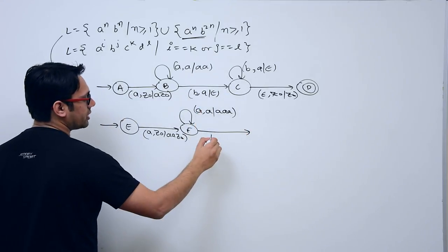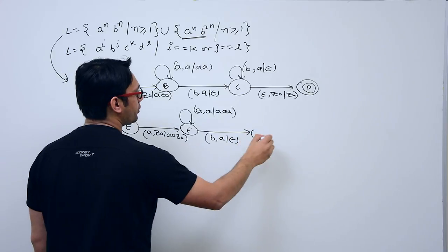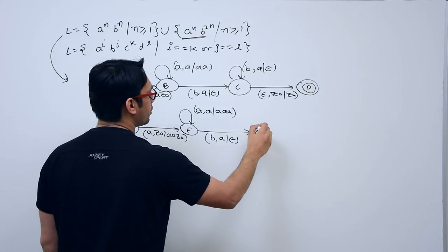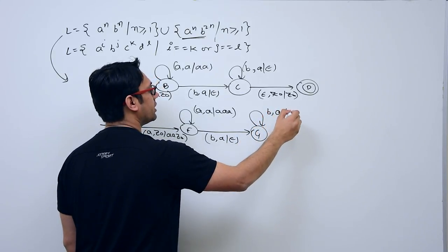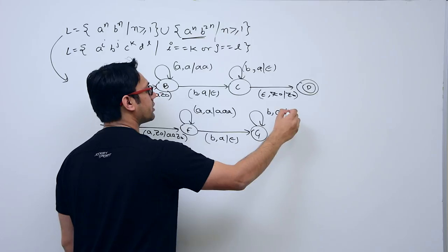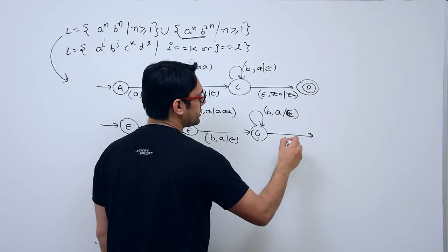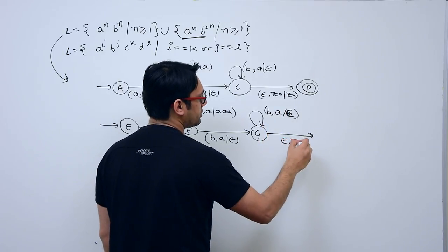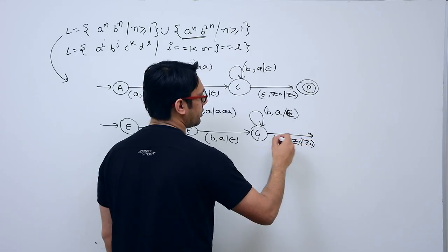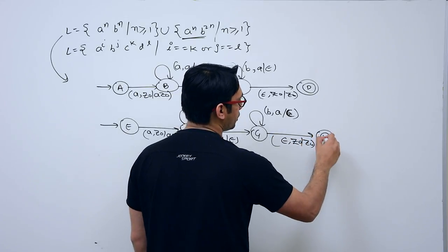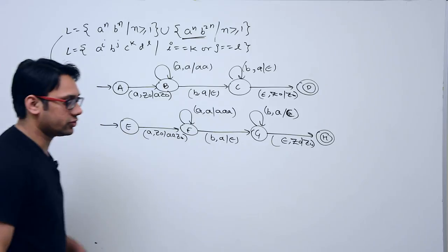As soon as you get a 'b' and 'a' is on the stack, pop it. You can get any number of b's — with 'a' on the stack, pop them. If it is epsilon and z-naught is on the stack, leave it at z-naught and accept it. This covers both parts of the first language.